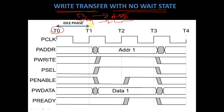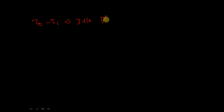In clock cycle T0 to T1 it is an idle phase. Since there is no address given, P_WRITE is also unknown, and P_SELECT is low — no slave is selected, that's why it is an idle phase. If P_SELECT is equal to 0, then it is an idle phase, and P_ENABLE is also unknown. P_WDATA is also not given and P_READY is also unknown.